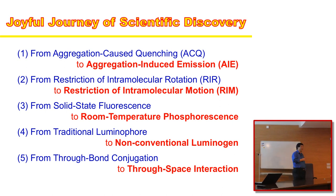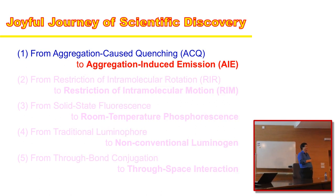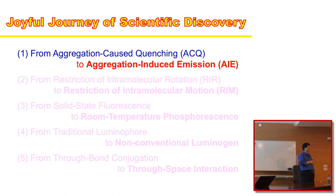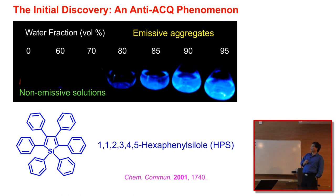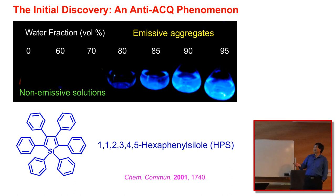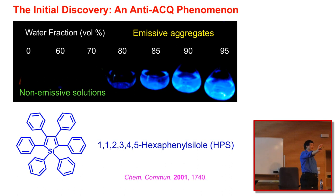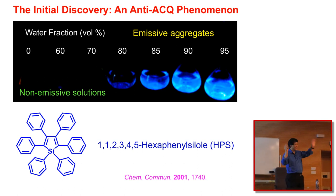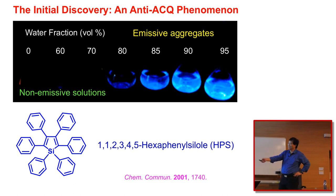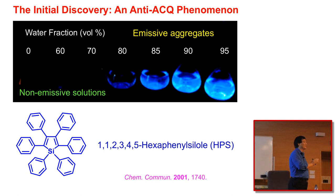The first story is our initial discovery in 2001, which tried to solve the ACQ problem that has plagued researchers for 100 years. This molecule is exactly opposite to the ACQ effect — it's a hydrophobic aromatic compound soluble in many organic solvents. When dissolved in THF at very low concentration, there is no emission at all, meaning the molecular species is not fluorescent. However, if water is added into THF, when the water content becomes high, the molecule starts to form aggregates, and you see emission turn on. The more water added, the stronger the emission. The molecular species is not emissive — the emission is induced by the formation of aggregates. I call this aggregation-induced emission, or AIE.